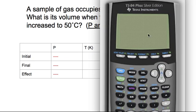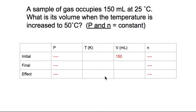So let's do that. If I take 273 and I add that to my 25 degrees C that I started with, what I'll get is 298 Kelvins. So I'll put that in my initial temperature column.